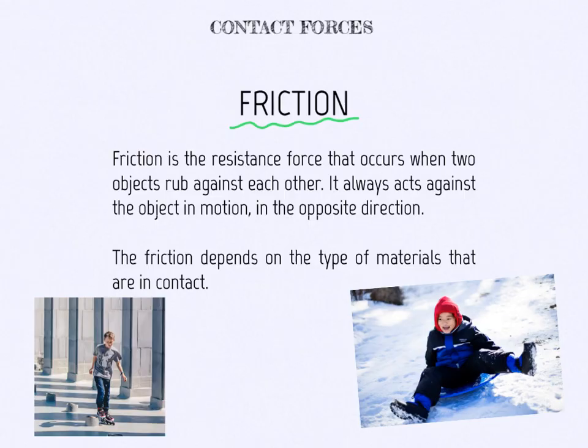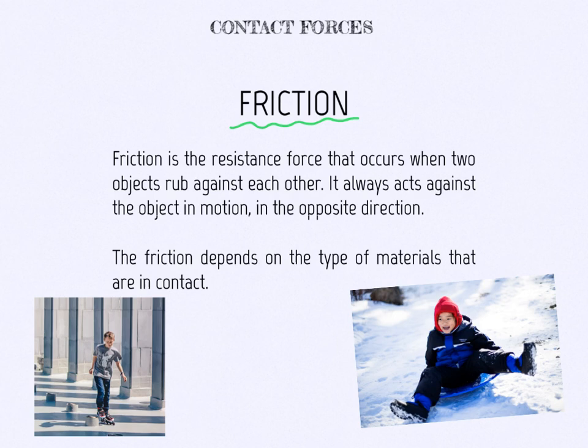Friction is the resistant force that occurs when two objects rub against each other. It always acts against the object in motion, in the opposite direction. For example, this boy is roller skating and the friction goes against him, so he is doing some force to go forward and the friction is stopping him a little bit.